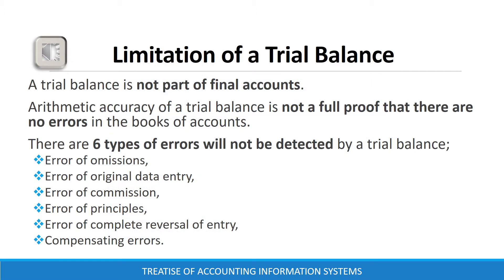A trial balance is limited in that it is not part of the final accounts. Secondly, the arithmetic accuracy of a trial balance is not full proof that there are no real errors in the books of account. There can be six types of errors that will not be detected by a trial balance: error of omission, error of original entry, error of commission, error of principle, error of complete reversal of entry, and compensating errors.